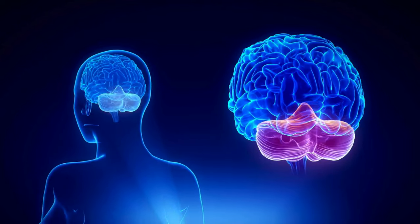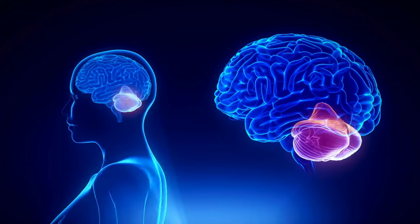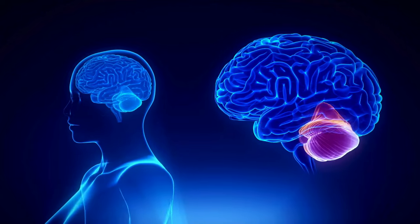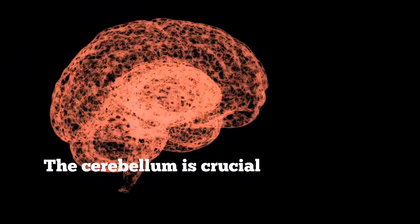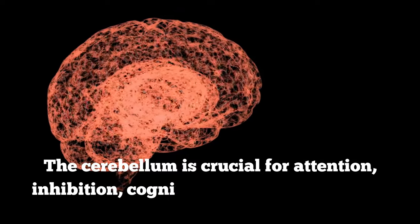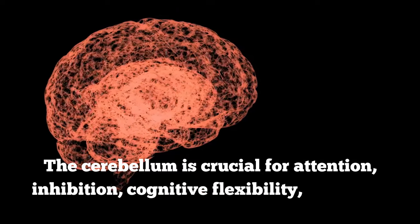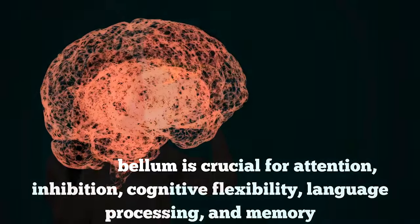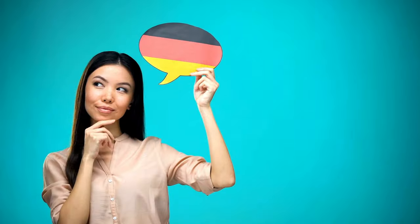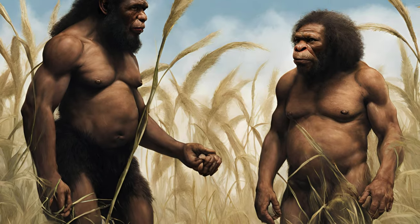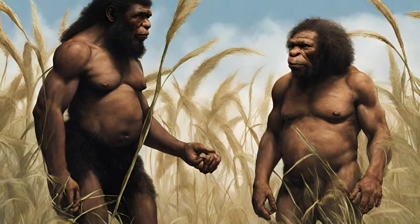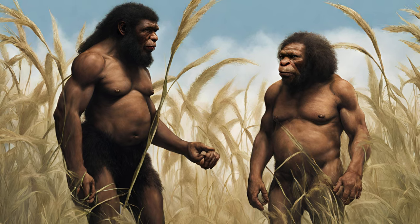It's like our cerebellums have a bump at the bottom that Neanderthals don't have. The cerebellum is crucial for attention, inhibition, cognitive flexibility, language processing, and memory. A bigger cerebellum is linked to better language processing and larger working memory capacity, suggesting that early modern humans might have had cognitive advantages over Neanderthals.